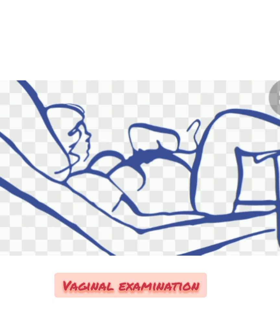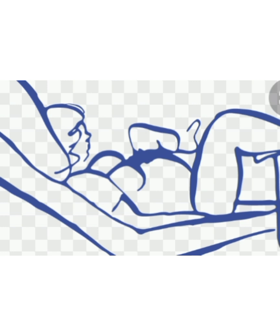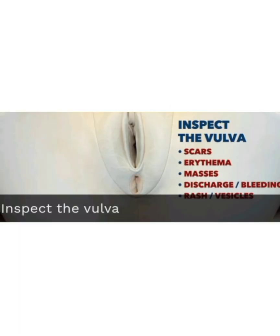For the vaginal examination, done at the antenatal clinic or sub-center level, the patient is placed in a dorsal position with thighs flexed and buttocks at the foot end of the table. We wash hands with soap and water and put on sterile gloves. For inspection, we separate the labia with the left thumb and index finger and note any vaginal discharge, detecting cystocele, uterine prolapse, or rectocele.